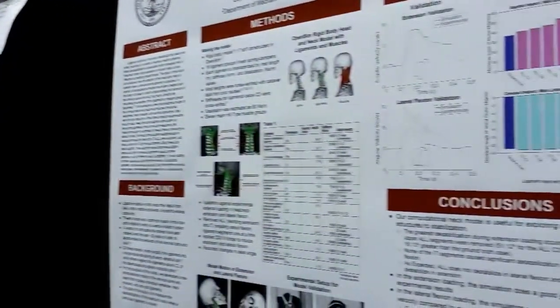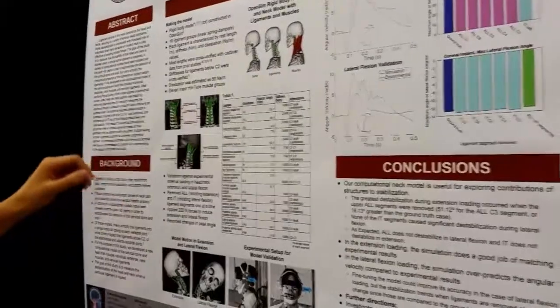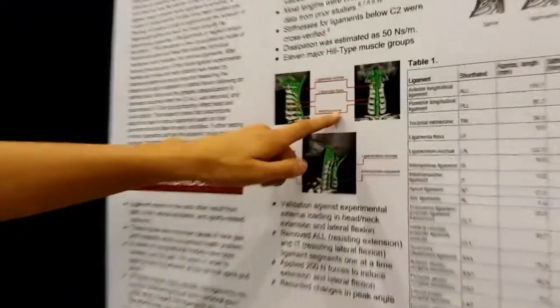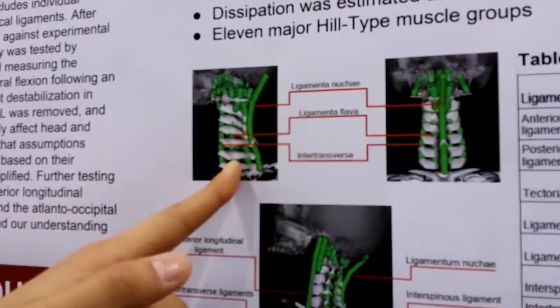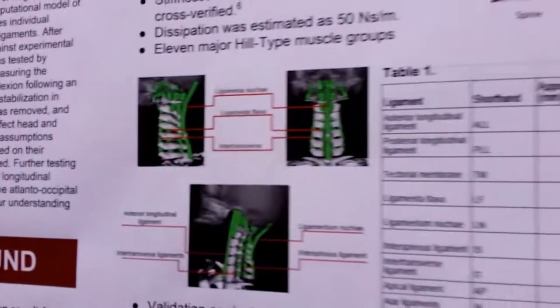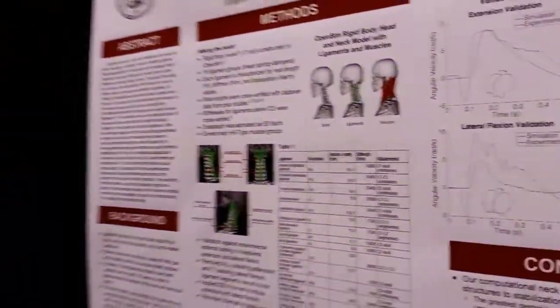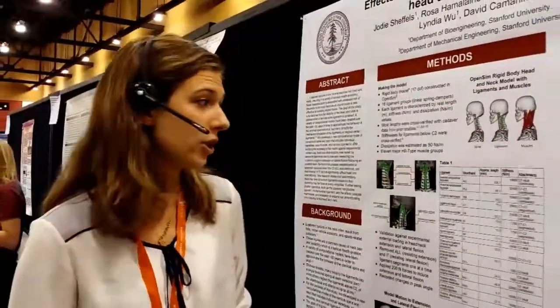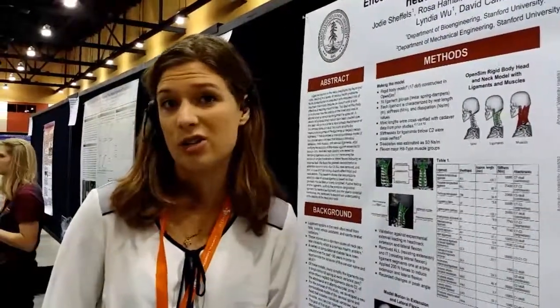So that's what we found in the extension direction. In the lateral flexion direction, we looked at the inter-transverse ligaments — these are small ligaments that connect the vertebrae at each level here. And interestingly, we did not see significant destabilization. So it looks like the inter-transverse ligament is not the most important ligament in the lateral flexion direction.